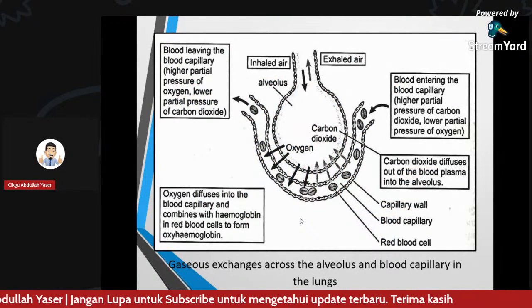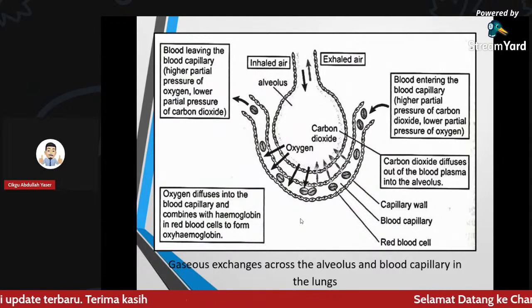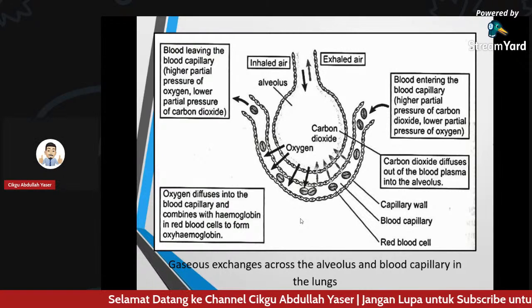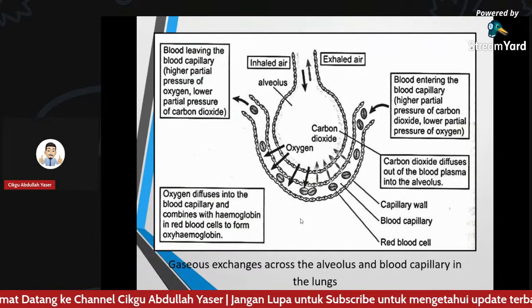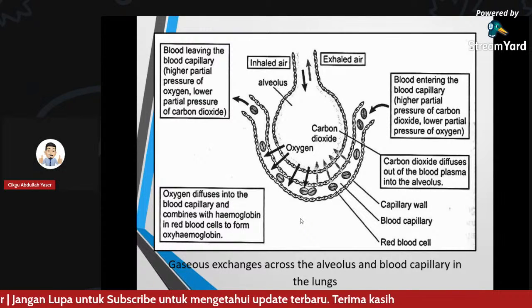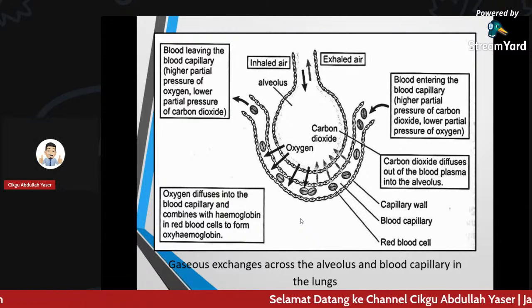Gas exchange occurs across the alveolus and blood capillary in the lungs. The blood is the main transport medium for gases. You need to understand two different places where gas exchange occurs: number one is in the lungs, and number two is near the tissue cells.